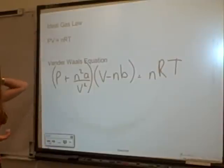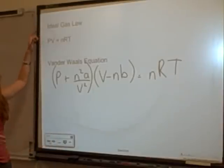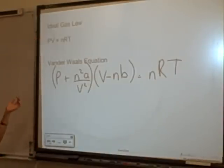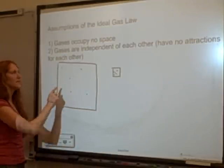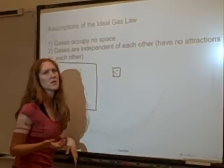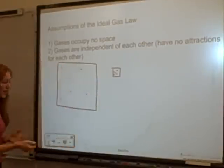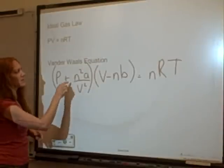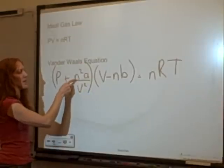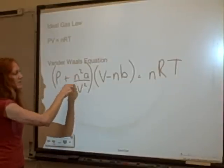We want to use the ideal gas law whenever we can — it's quick to calculate and works for all ideal gases. To tell if a gas is ideal, if both equations give the same pressure, it's ideal. At low concentration, particle volume is less important and particles are farther apart with less attraction. At high concentration, both the volume of particles and their attractions become more significant.